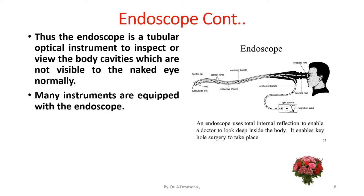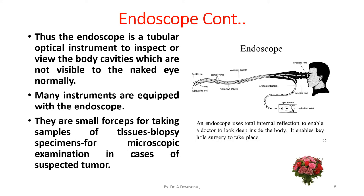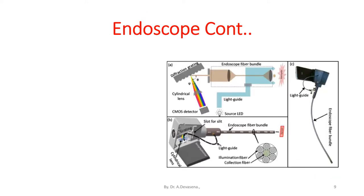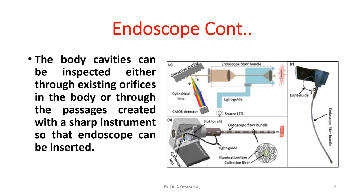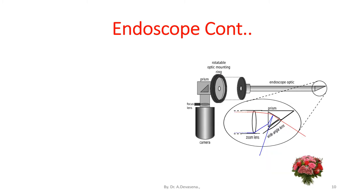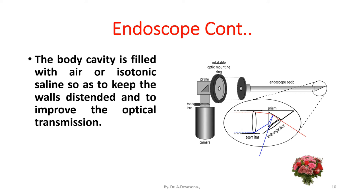Many instruments are equipped with the endoscope. They include small forceps for taking samples of tissues and biopsy specimens for microscopic examinations in case of suspected tumor. The body cavities can be inspected either through existing orifices in the body or through passages created with a sharp instrument so that the endoscope can be inserted. The body cavity is filled with air or isotonic saline so as to keep the walls distended and to improve the optical transmission.